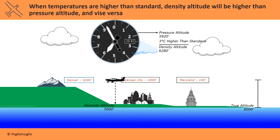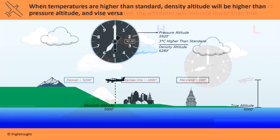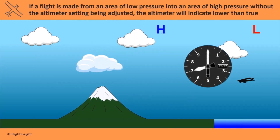Notice, though, that even though pressure and density altitude have changed, the indicated altitude is still 6,000 feet as we see when we set the altimeter back to the correct sea level pressure of 30.00. Because pressure changes over the course of a flight, the altimeter will read incorrectly if it's not periodically updated.